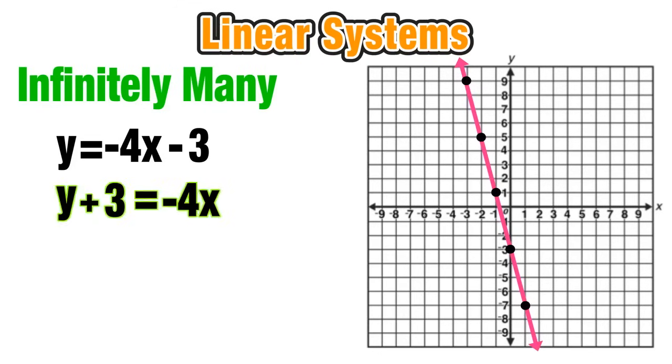Now the second equation is not in y equals mx plus b form. We have to get that plus 3 on the left side over to the right side to get the y by itself. Do that by subtracting 3 from both sides. On the left side, it cancels out. And on the right side, negative 4x minus 3. Those aren't like terms, so we just write it as an expression, y equals negative 4x minus 3.